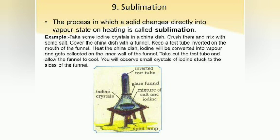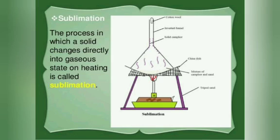The next kind of separation is sublimation, which means the solid converts directly into gas. One major sublimate is camphor. Camphor is heated and then there is an inverted funnel where camphor gets settled back in solid form. That is sublimation, and you can extract camphor out of a mixture of camphor and sand using this method.